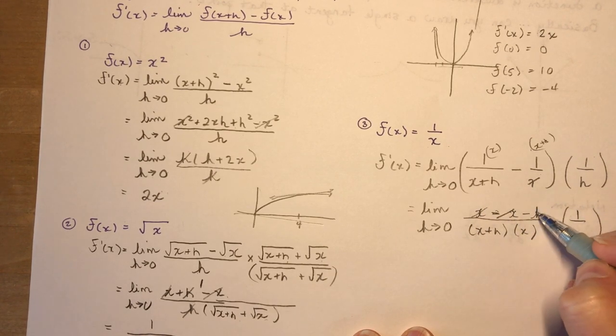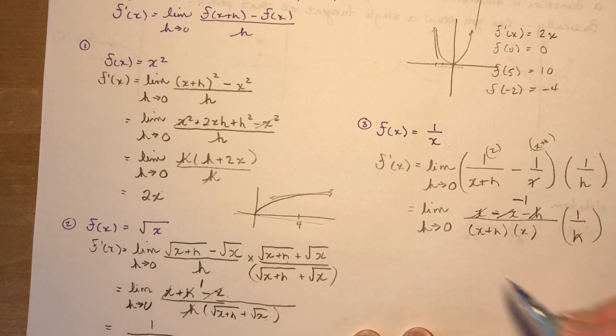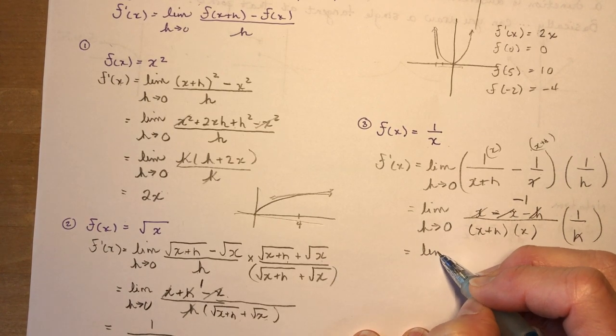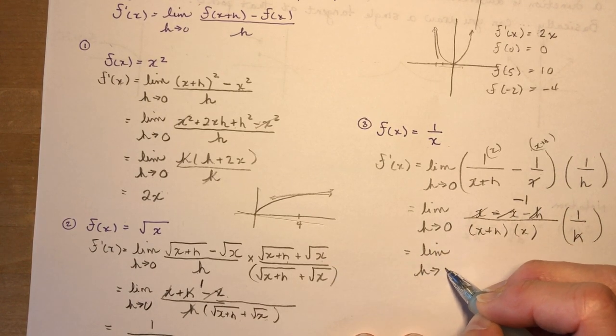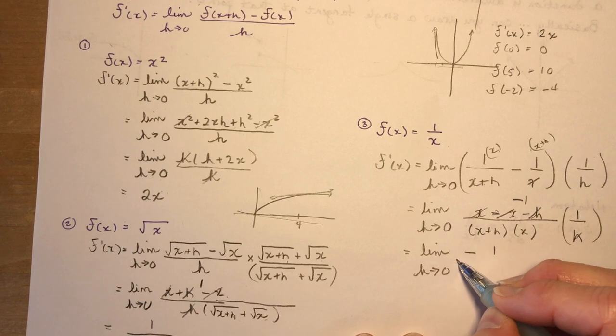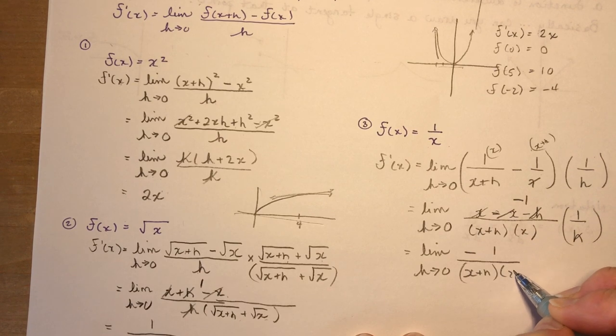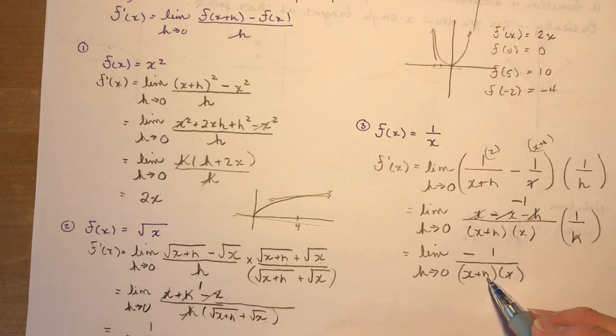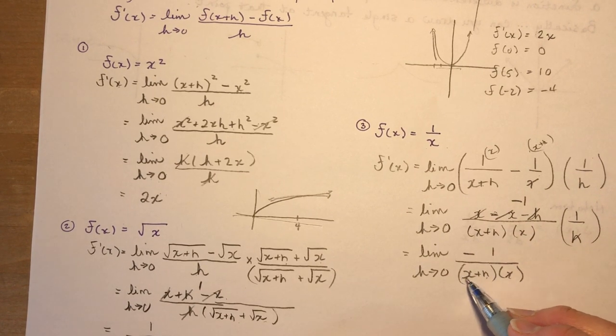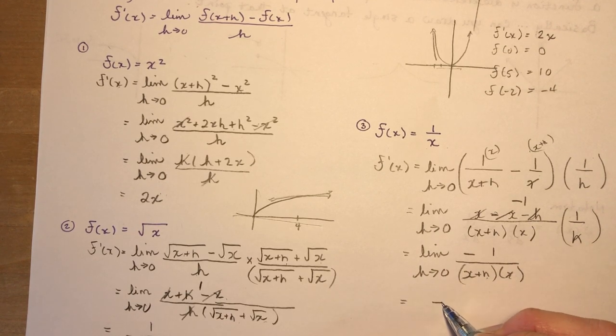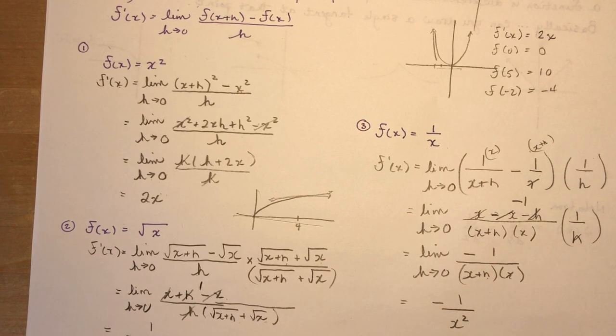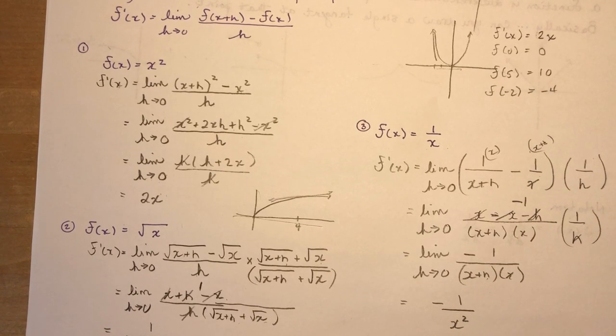H goes into h minus 1 times. So now I have the limit as h approaches 0 of minus 1 over x plus h times x. I put in h is 0, and I have x times x, and I get minus 1 over x squared.